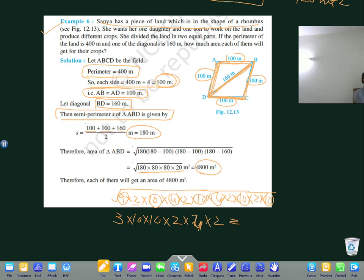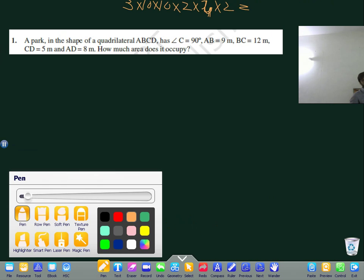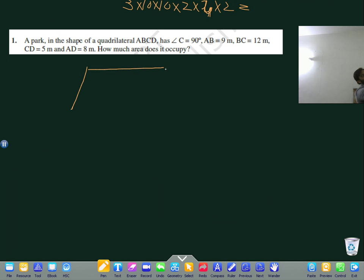Therefore, each of them will get 4800 meter square. A park in the shape of a quadrilateral ABCD has angle C equals 90 degrees. AB is 9, BC is 12, CD is 5, and AD is 8. How much area does it occupy? Here we can draw the diagonal because wherever you see a right angle triangle, you can easily get the hypotenuse.